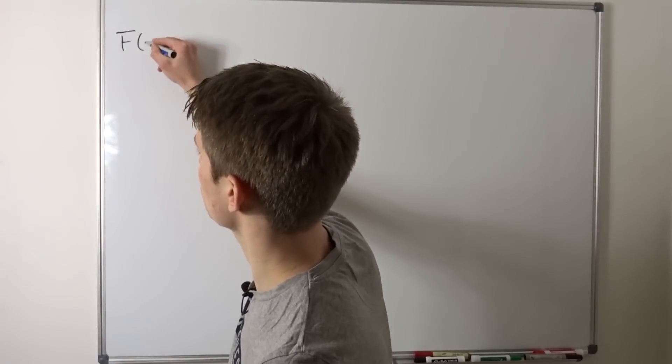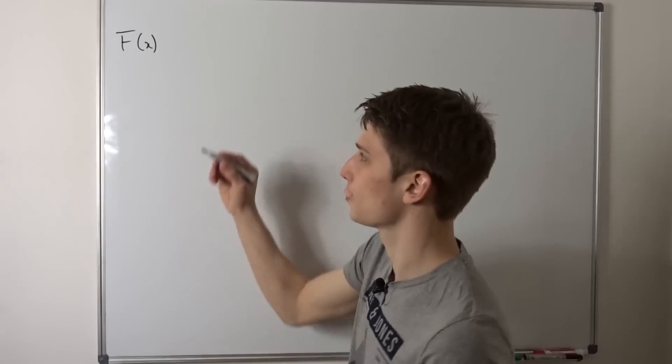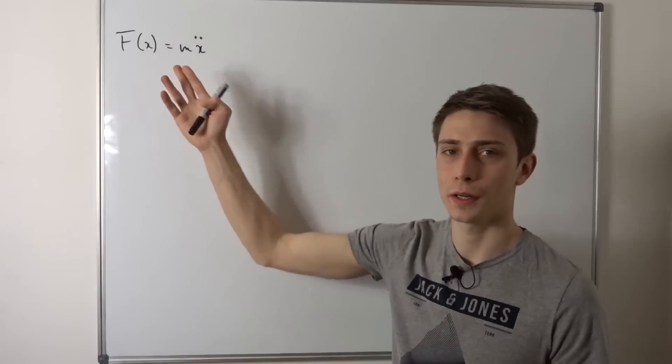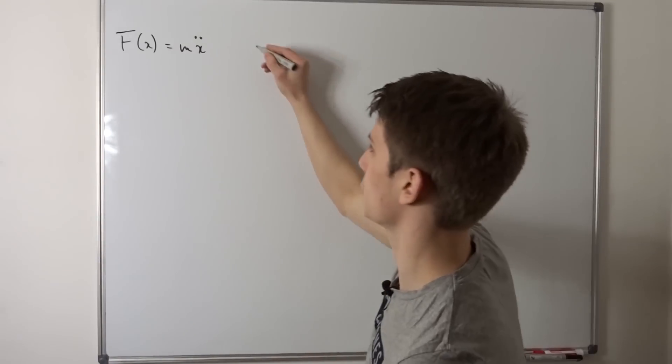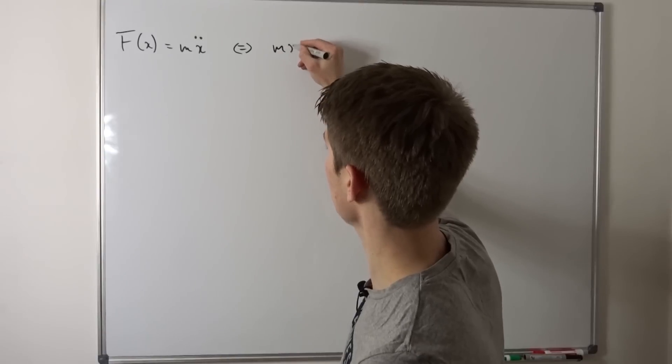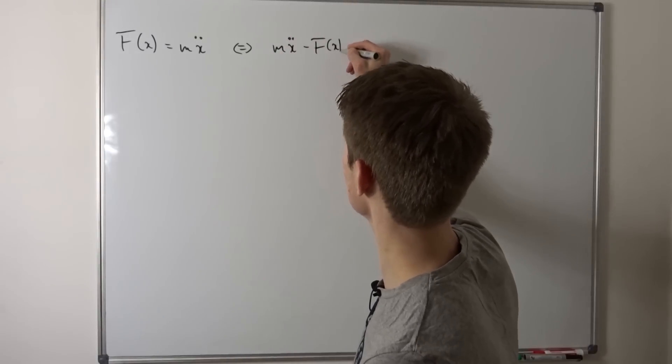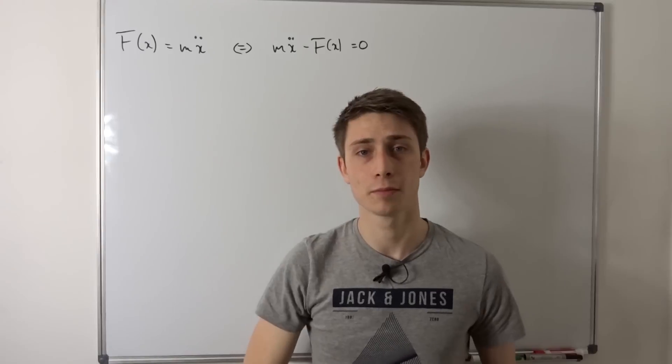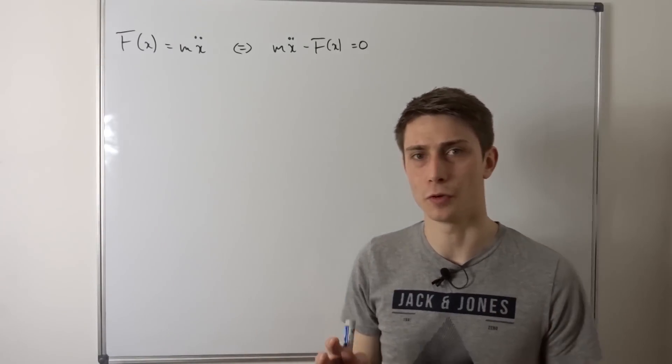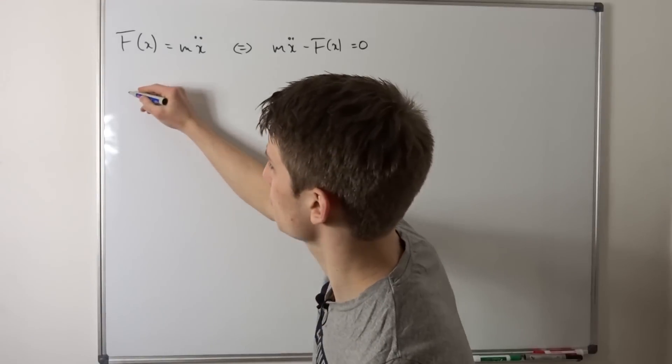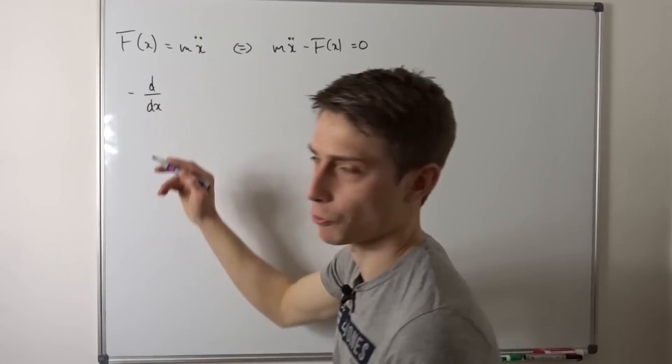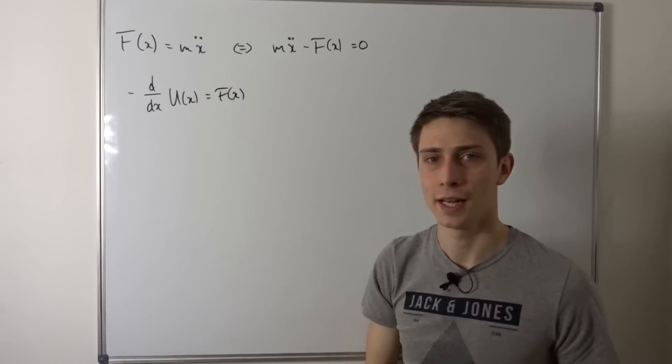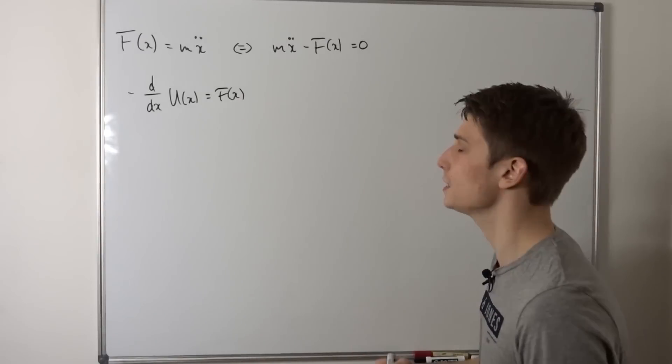So let's say we have a random conservative force F in terms of x and you might know that a force is nothing else than mass times acceleration x double dot. What we can do now is bring F in terms of x to the other side and see what we get. So this is now equivalent to saying we have m x double dot minus F in terms of x and this is going to be zero.